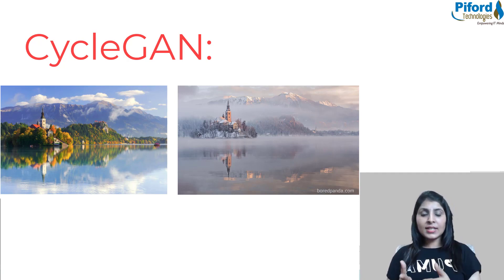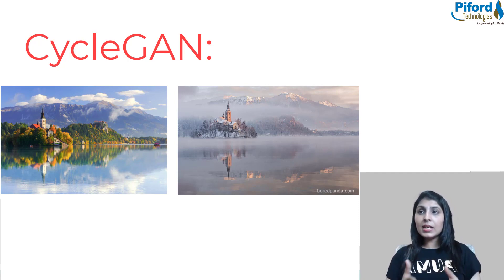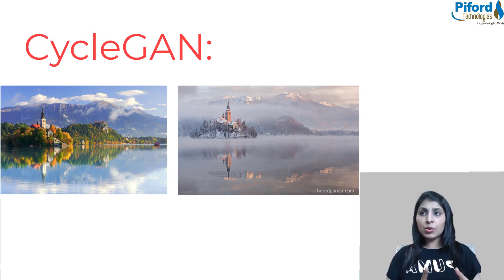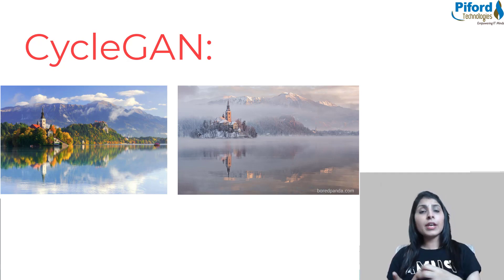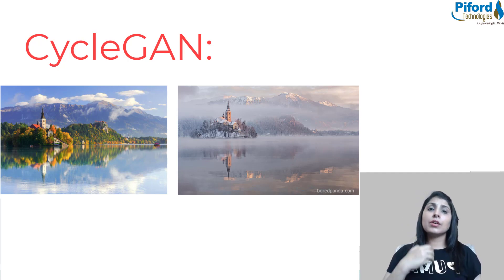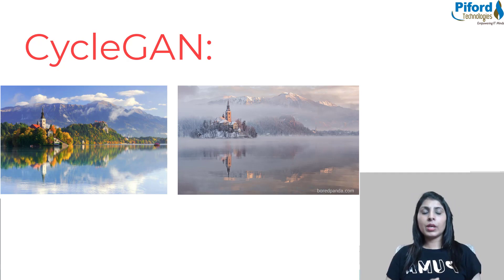What CycleGAN does is it basically captures the characteristics of one image domain and then figures out how these characteristics can be transferred to another image domain.